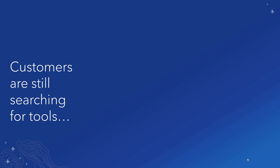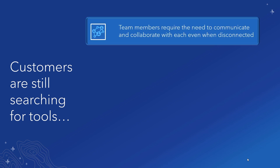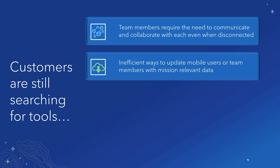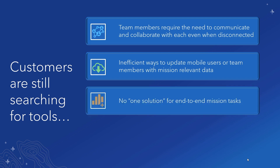There are several tools on the market today that address some level of situational awareness. What we found from customers we've engaged with is that there are still gaps that need to be addressed in workflows. For instance, team members require the ability to communicate and collaborate in areas such as edge of network and disconnected environments. And mobile users need updated information — in some cases they are provided with information on SD cards that become dated as soon as they get in the field. These methods make it difficult to provide timely updates of relevant mission information. Also, there is no one solution to address end-to-end mission tasks, and customers find themselves repurposing specific features from multiple apps to satisfy this requirement.